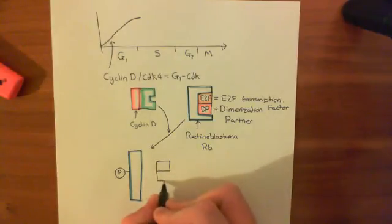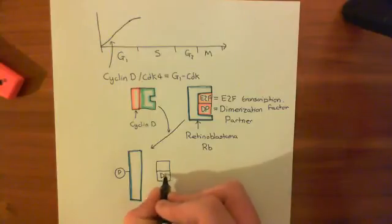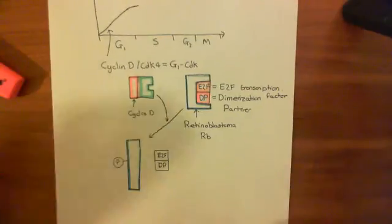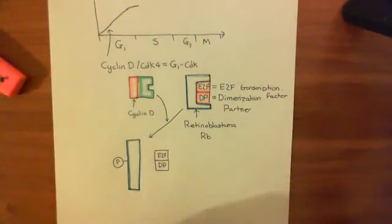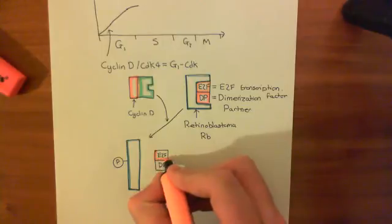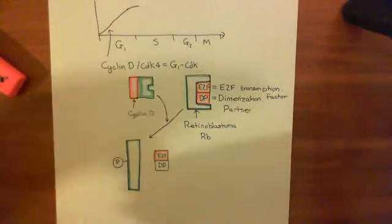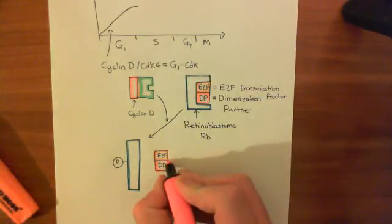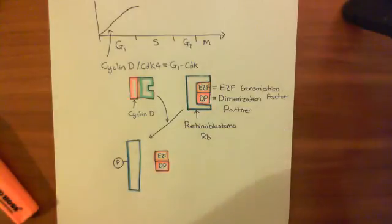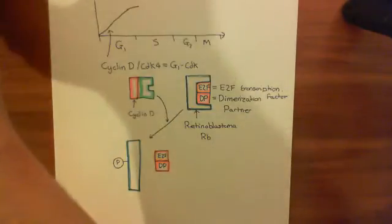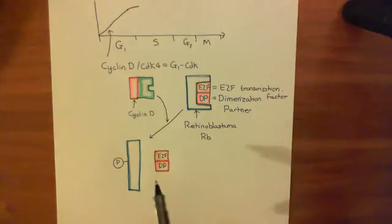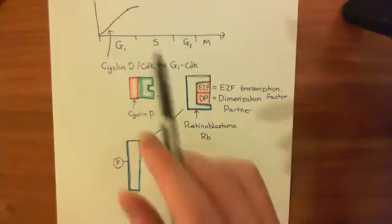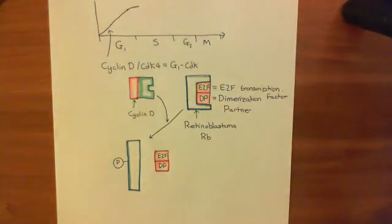So E2F and its dimerization partner are released. When this happens, the E2F transcription factor and its dimerization partner will move the cell from the G1 to the S phase of the cell cycle. The cyclin D CDK4 complex is very much responsible for the movement from G1 to S phase, and it needs to accumulate in the cell for that to occur.